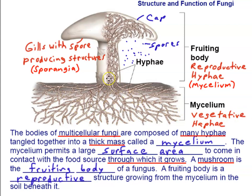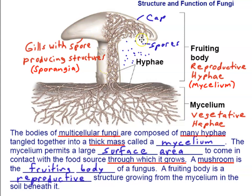There are also hyphae above the ground forming a tangled mat that makes up the fruiting body and produces spores — these are made up of reproductive hyphae, or reproductive mycelium. The whole toadstool is made up of reproductive mycelium: specialized hyphae that produce spores.